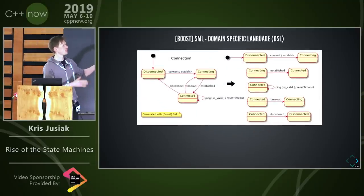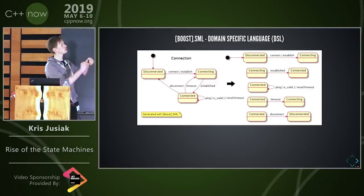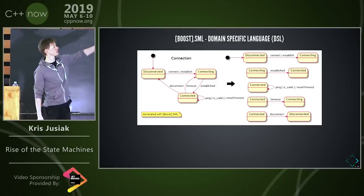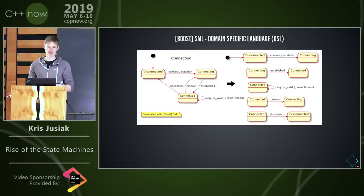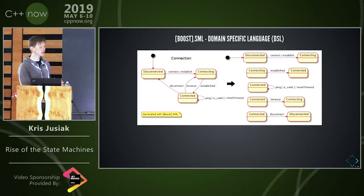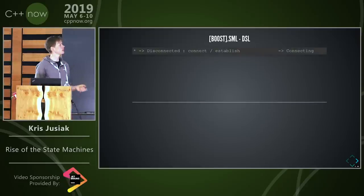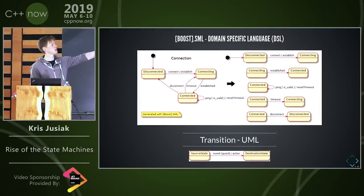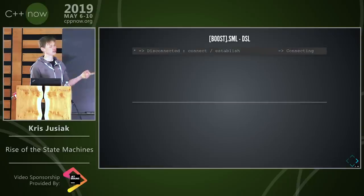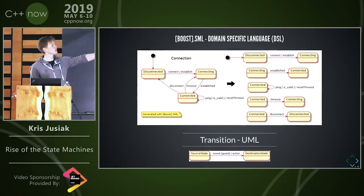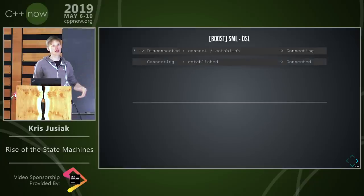We have a connection — we start with the star (*) which is the disconnected initial state, and when we get the connect event we call the established action (a lambda defined at the top) and go to the connecting state. That's quite easy to grasp, and the audience agrees it's readable. The transition table maps one-to-one to a UML diagram: disconnected → connect / establish → connecting. It's basically the same as the diagram on the right, just in text instead of pictures.